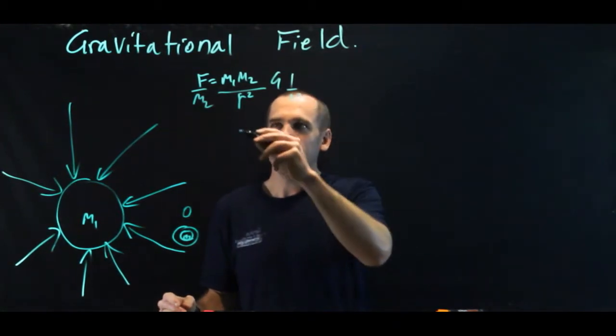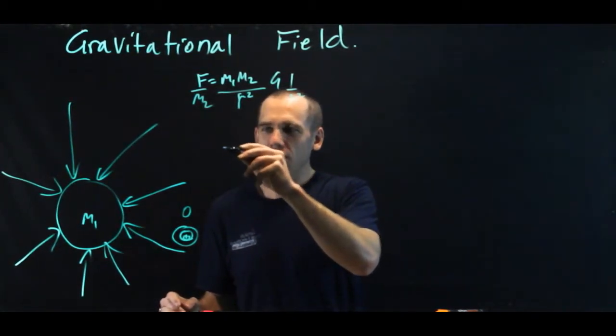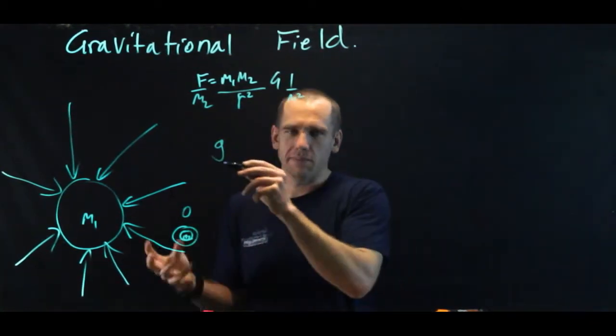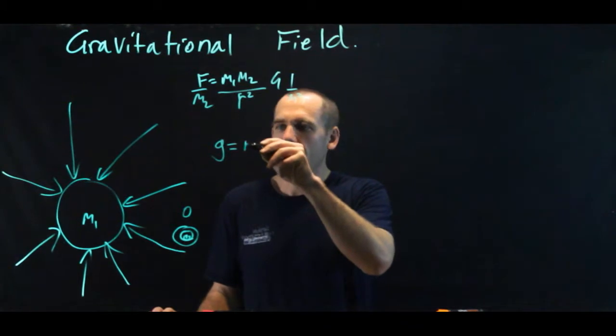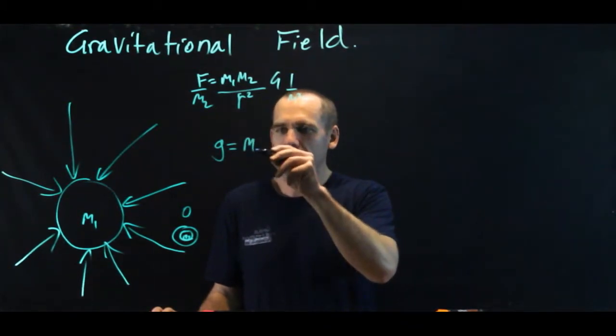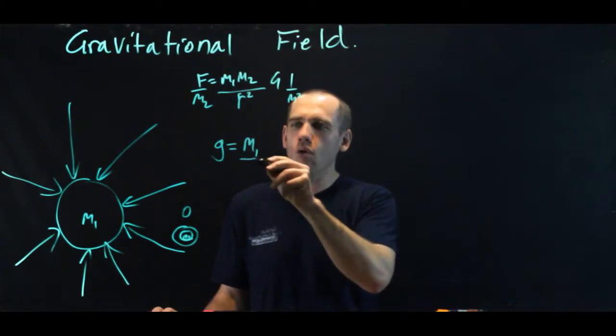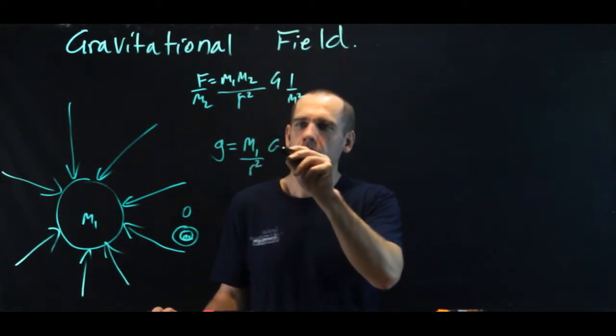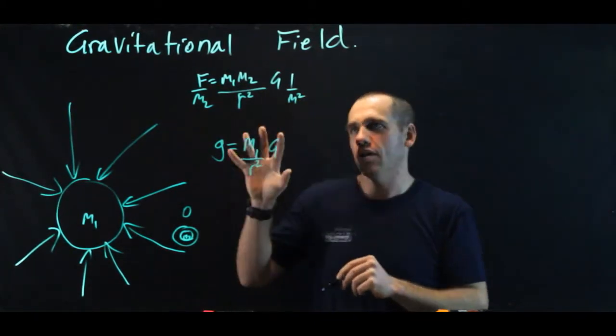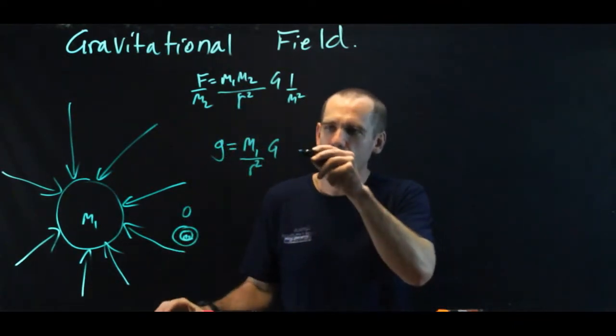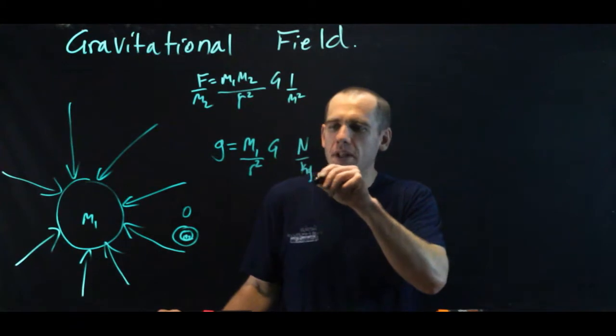What I'm left with is this concept of gravitational field, which gets the symbol little g, is equal to m1, which is the mass of the thing that's creating the field, over r squared times G. Now, the units on this are not force, the units on this are newtons per kilogram.